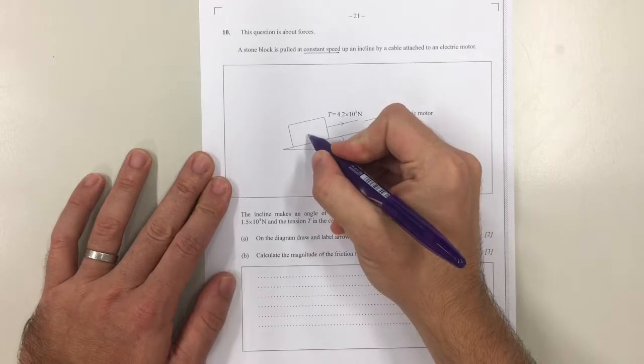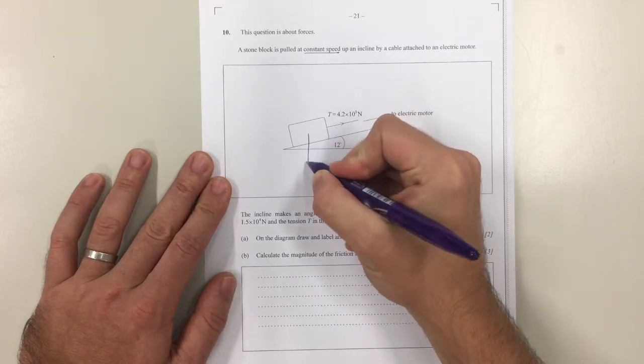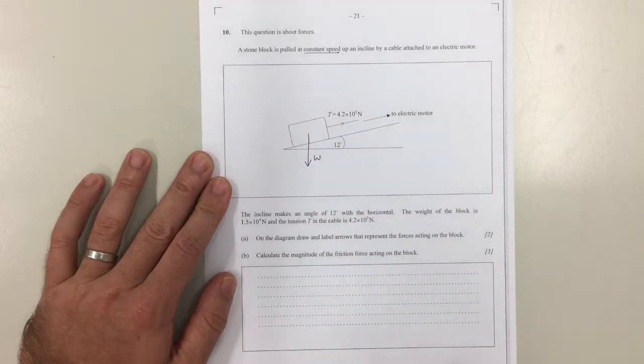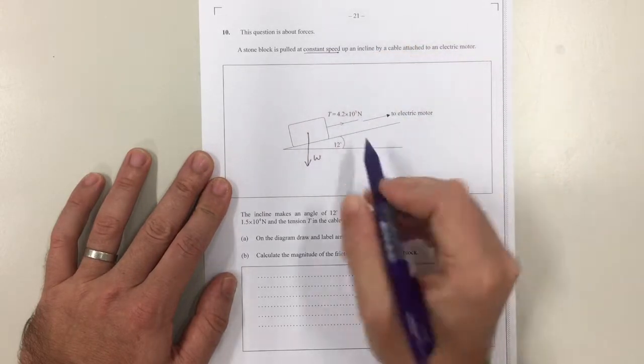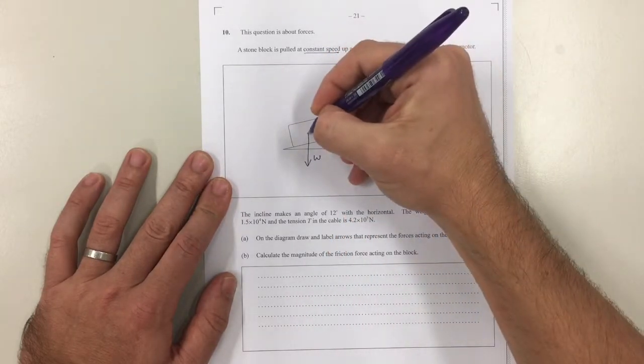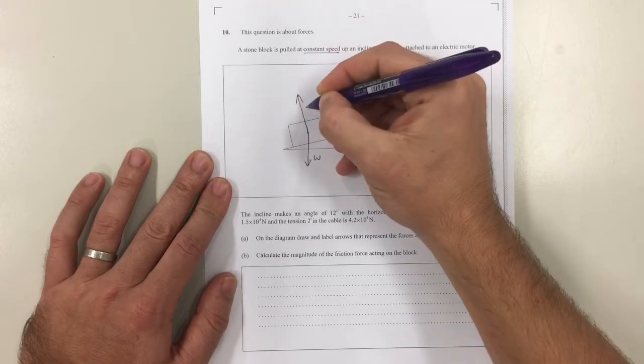Now our first force that we can label is the weight, call that W. The next force that we can label is our reaction force. Now the reaction force has to be at 90 degrees to the slope, so that's our normal reaction, R.